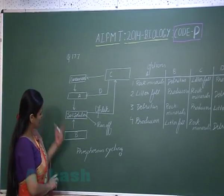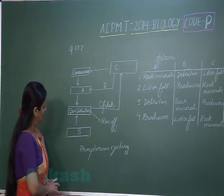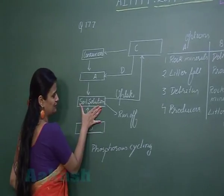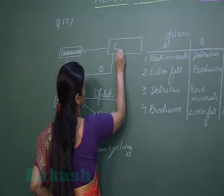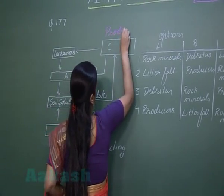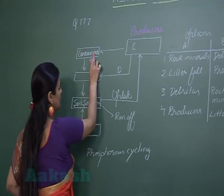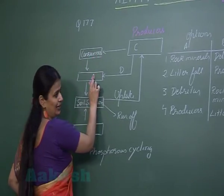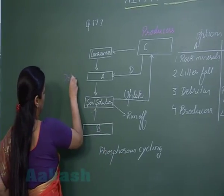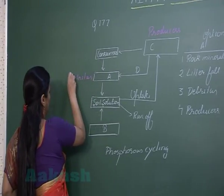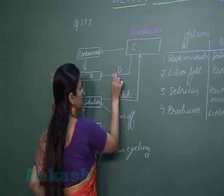In question number 177, we have to look for the right options for phosphorus cycling. From the soil solution, phosphorus is taken up by the plants, that is the producers — so C represents producers. Producers are eaten up by consumers. Consumers die and result in the formation of dead mass, that is detritus. So A is detritus.